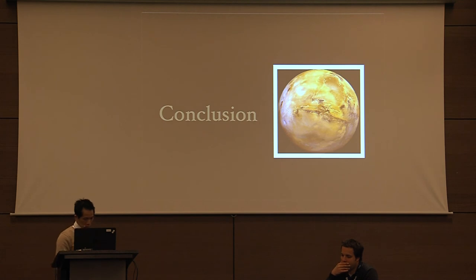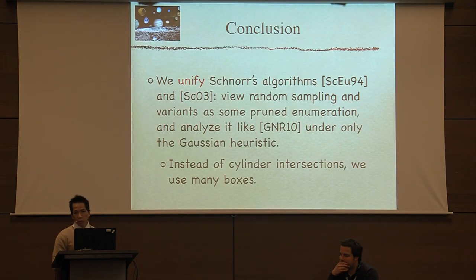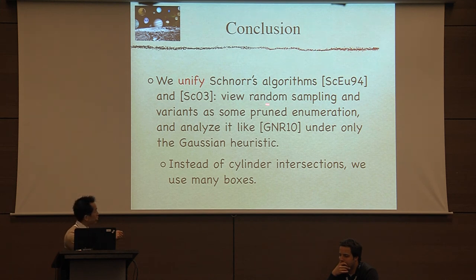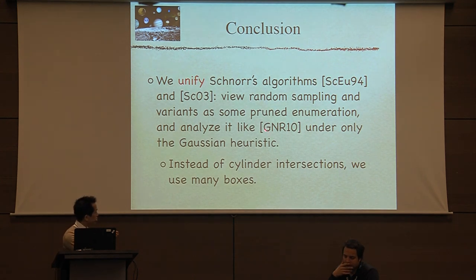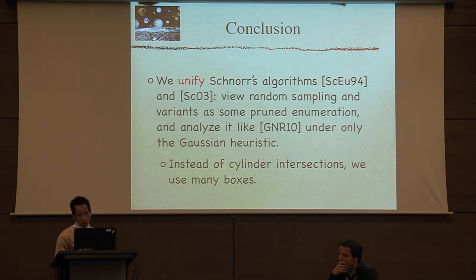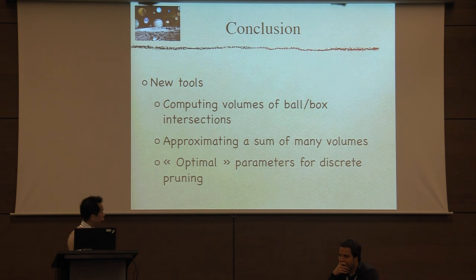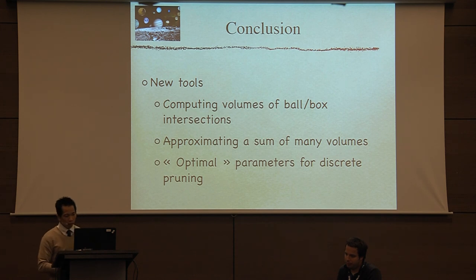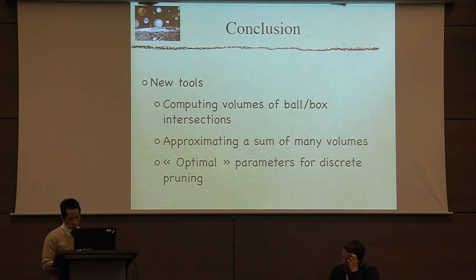In conclusion, we unified Schnorr's two algorithms: pruned enumeration from the 1990s and random sampling from the 2000s. We view random sampling as really an enumeration — the name is actually not good, it should be called enumeration. We analyze it under only the Gaussian heuristic, getting rid of the funny assumptions, and the only difference from cylinder pruning is that we now deal with boxes. We introduce new tools to compute ball-box intersection volumes, approximate the sum of many volumes, and generate nearly optimal parameters — finding the best cells.